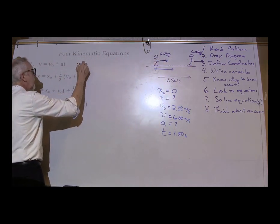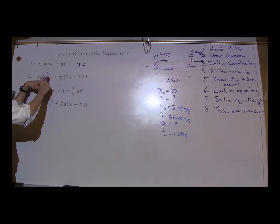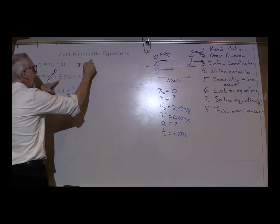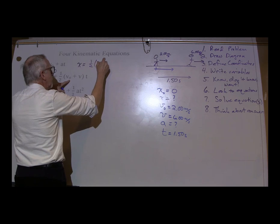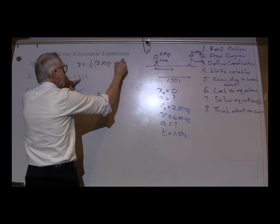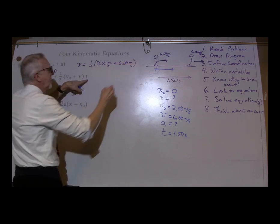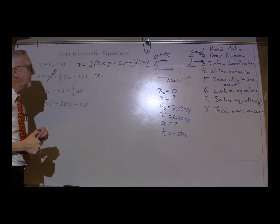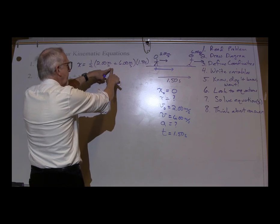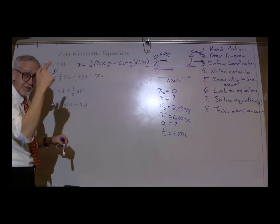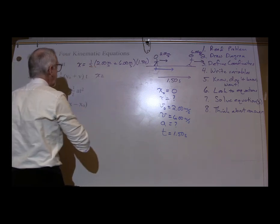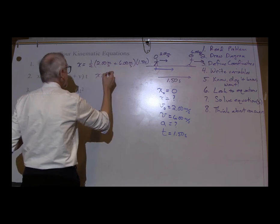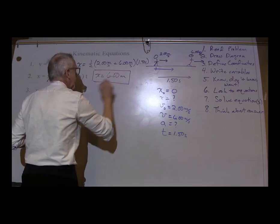X equals — I'm going to draw on the equation. X naught is zero, so we don't need to worry about that. Equals one half times V naught — V naught is 2 meters per second — plus V, 6 meters per second, times T, 1.50 seconds. Let's think about the units: meters per second plus meters per second gives meters per second, times seconds cancels to give meters. Two plus six is eight, divided by two is four, four times 1.5 is six meters. There is our answer for X.